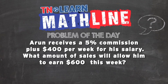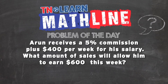Aaron receives a 5% commission plus $400 per week for his salary. What amount of sales will allow him to earn $600 this week? So Aaron has 5% commission plus $400 per week for his salary, and he wants to earn $600 this week.